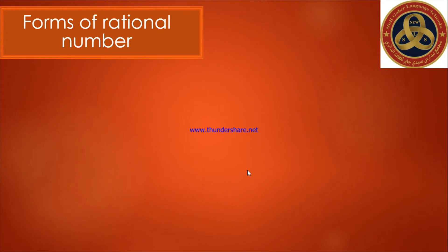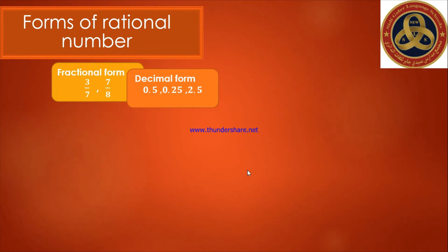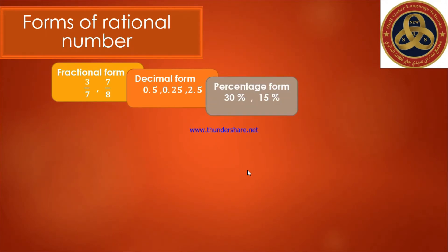The forms of rational numbers: the first form is the fractional form, like a over b — for example three over seven, seven over eight, two over nine, one over two, negative one over five. The second form is the decimal form, like zero point five, zero point two, two point five. The third form is the percentage form, like thirty percent, fifteen percent, twenty-nine percent, two point five percent.